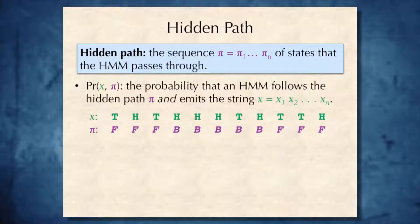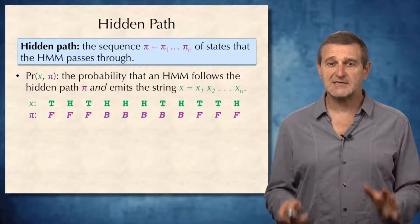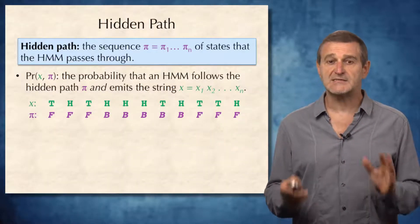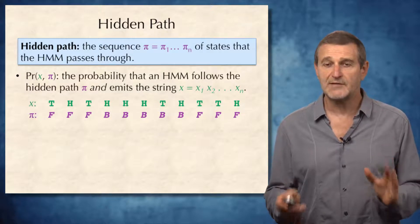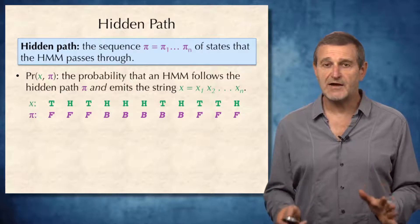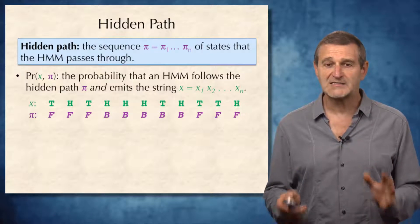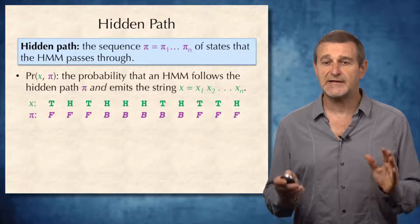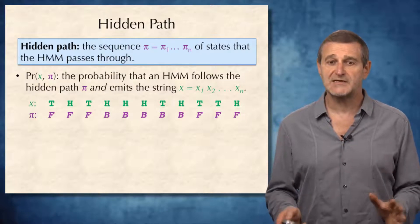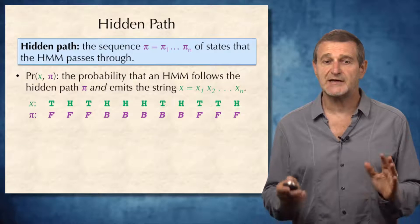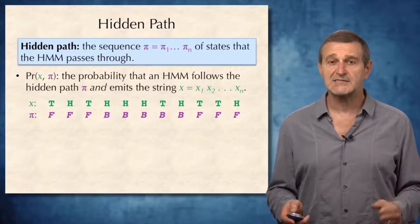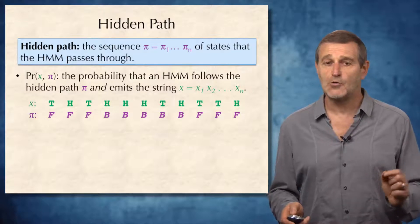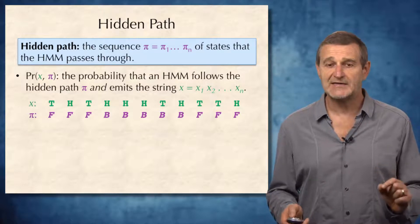To study hidden Markov models, we will define the notion of a hidden path. The hidden path is a sequence of states that the HMM passes through, denoted as π = π₁, π₂, ..., πₙ. We will also define the probability of (x, π), which is the probability that an HMM follows the hidden path π and emits the string x.